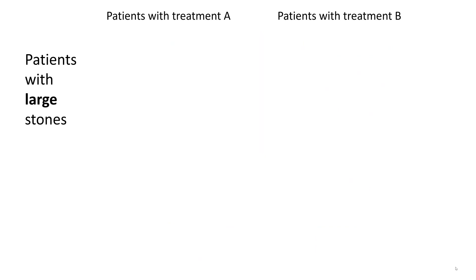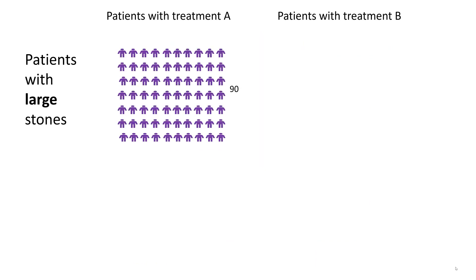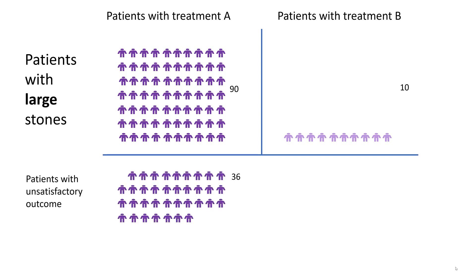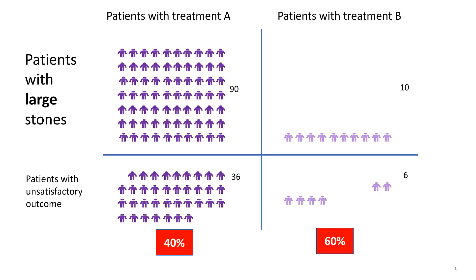Now let's look at patients with large stones. There were 90 who got treatment A, and only 10 patients with large stones who got treatment B. In terms of the failure rates, there were 36 with large stones who got treatment A, and 6 with large stones who got treatment B. That's a 40% failure rate for treatment A with large stones, compared to a 60% failure rate for treatment B with large stones. Again, treatment A is better than treatment B for patients with large stones.